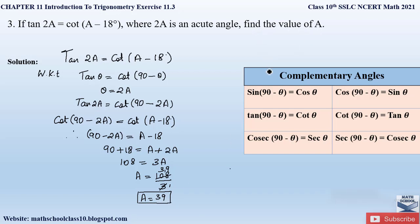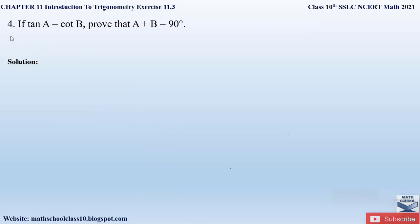So this is what they asked in the question — to find the value of A. This is a very easy problem; we just apply the complementary angle identity on either side of the given equation to find the result. If you have any further doubts, comment below. In my next video I'll be solving question number 4 from exercise 11.3. Do like my video, subscribe to my channel, and hit the bell button to get the latest updates. Thank you.